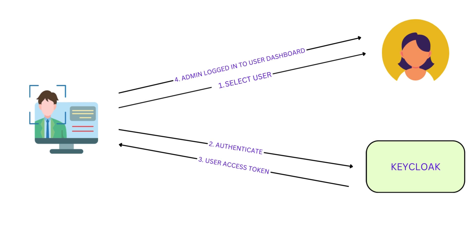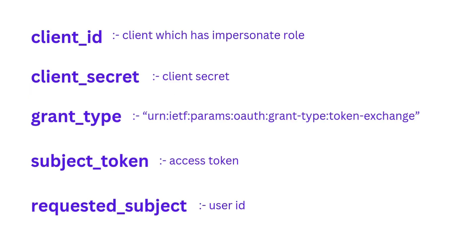I will show this in a Postman request. The required parameters are: client ID — the client which has the impersonation role (I'll explain in Keycloak); client secret; grant type — a specific grant type I'll show; subject token; and requested subject — this is the user ID of the user we want to impersonate.